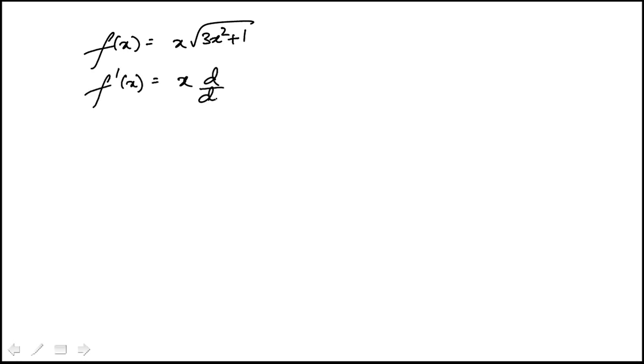So that would be x times derivative of square root of 3x squared plus 1 plus this times the derivative of x, which would be just 1. So I need to compute that.